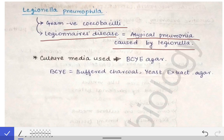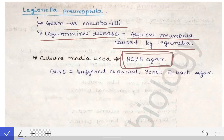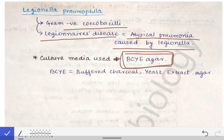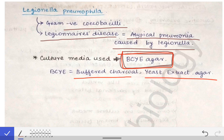The selective culture media for Legionella pneumophila is BCYE agar — an important MCQ point. BCYE stands for buffered charcoal yeast extract agar. This is the key fact about Legionella pneumophila, and that concludes the topic of atypical pneumonia and the organisms causing it.